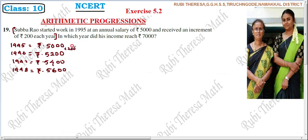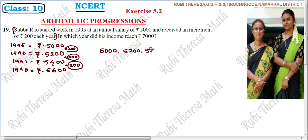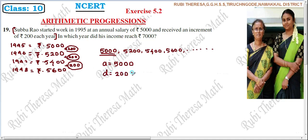So each year he gets an increment of Rs. 200 — plus 200 here and again plus 200. A fixed number is being added to form a sequence. That fixed number, 200, is the common difference. So we can write the sequence as 5000, 5200, 5400, 5600, and it goes on. The first term A equals 5000, and common difference D equals 200.